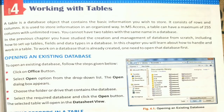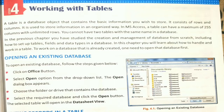A table is a database object that contains the basic information you wish to store. It consists of rows and columns — similar to how you work in Excel. A table is used to store information in an organized way. In MS Access, a table can have a maximum of 255 columns, but the rows are unlimited.